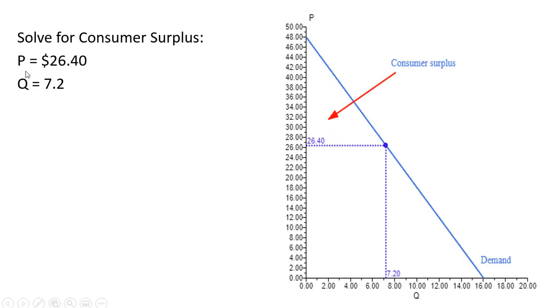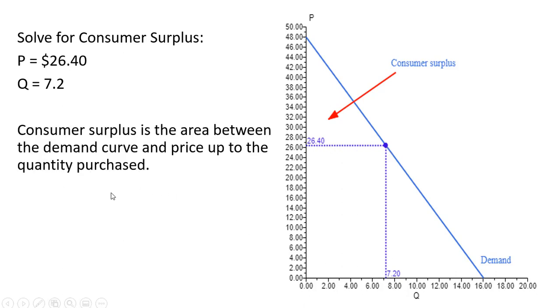And so we're going to solve for consumer surplus. Price equals $26.40, which I show here. And the quantity is 7.2, which I have here. Consumer surplus will be this area of the triangle between the height of the demand curve and this $26.40, up to 7.2 units. And the area of a triangle is one-half base times height, so 48 minus 26.4. That's one dimension of the triangle. And the other dimension here is 7.2 minus 0, or just 7.2. And we're going to multiply those together. And then again, it's one-half base times height, so that's where that one-half is coming from. And we get $77.76. Okay, that's it.